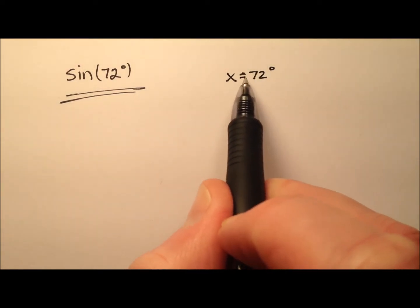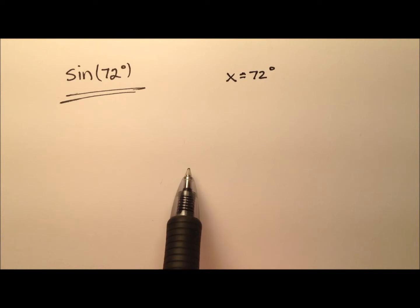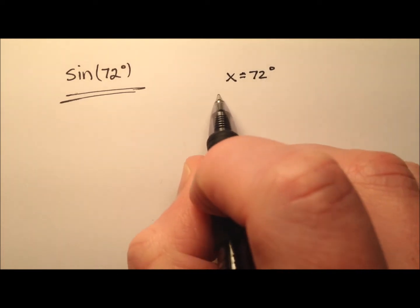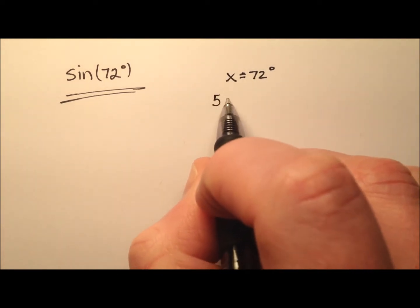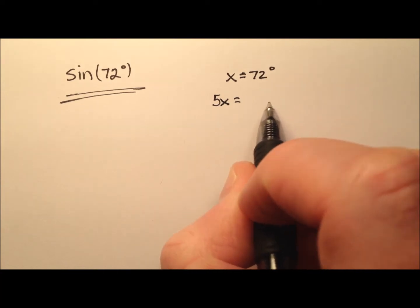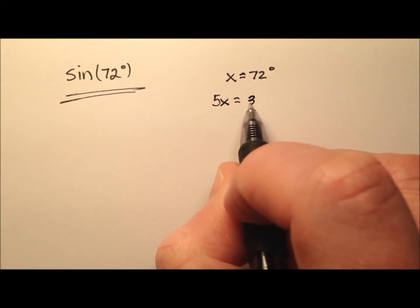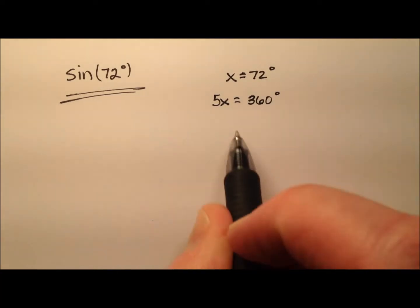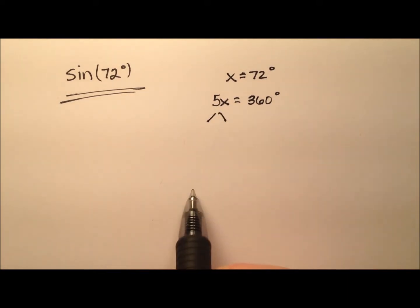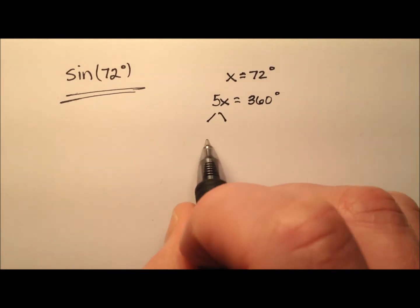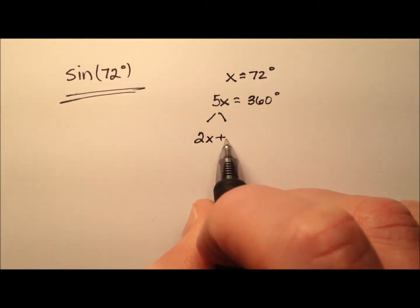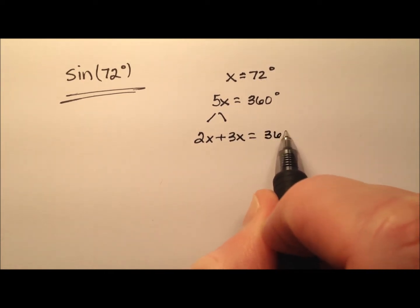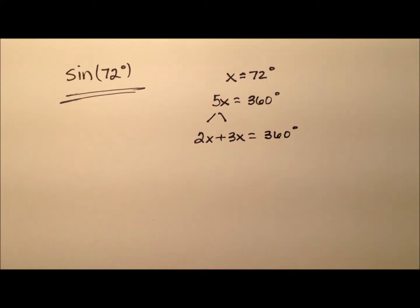I'm starting with an equation, so whatever I do to one side I can do to the other. I'm going to start by multiplying both sides by 5, so 5x equals 72 times 5, which is 360 degrees. Next, I'm going to break this 5x down into 2x plus 3x, and that equals 360 degrees.